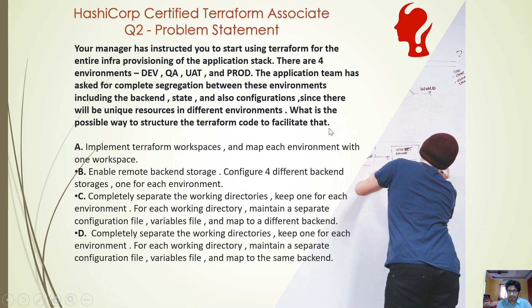What is a possible way to structure the Terraform code to facilitate that? Option A: implement Terraform workspaces and map each environment with one workspace. Option B: enable remote backend storage and configure four different backend storages, one for each environment. Option C: completely separate the working directories, keep one for each environment, maintain a separate configuration file, variable file, and map to a different backend. Option D: completely separate the working directories, keep one for each environment, maintain a separate configuration file and variable file, but map to the same backend.